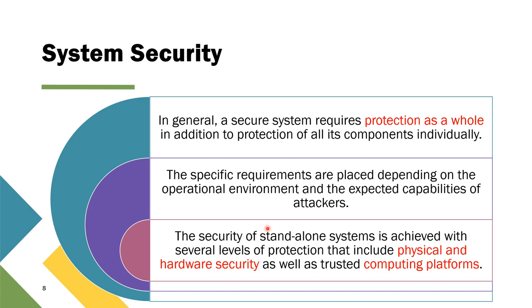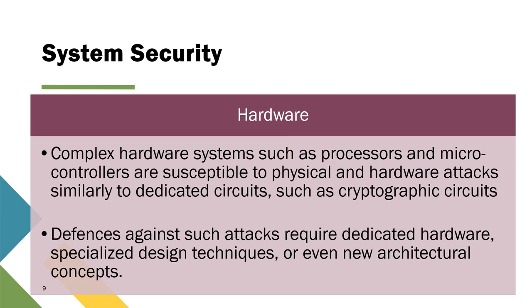Security of a standalone system is achieved with several levels of protection, including physical and hardware security as well as trusted computing platforms. Hardware components such as the processor and microcontroller are possible targets for attack. Defense against such attacks requires dedicated hardware, specialized design techniques, or even new architectural concepts. For example, a cloud facility like Google has seven layers of security to protect the hardware.